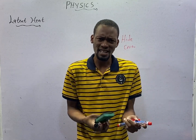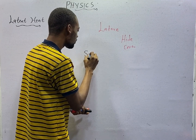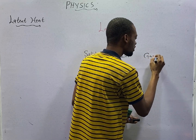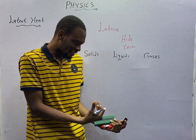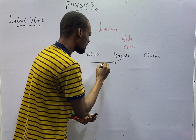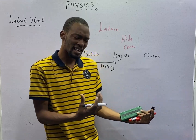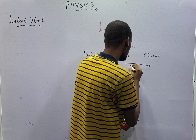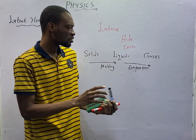Before now, we both agreed that matter can exist in three major states: solid, liquid, and gaseous states. We also agreed that matter can change from solid to liquid, and we said that is melting. We also agreed that matter can change from liquid state to gaseous state, and we said that is vaporization or evaporation, whatever you choose to call it.